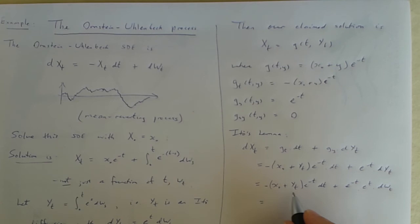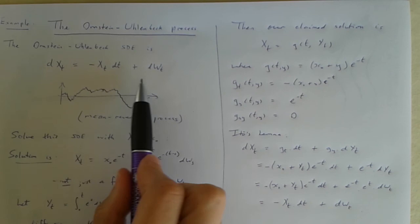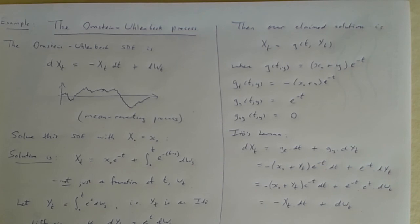And now what have we got left, well this whole thing is just minus xt, so we've got that and these two things cancel out so we're just left with one times dwt. So dxt is that which means our process that we've constructed this xt satisfies the differential equation. So that's verified that our claimed solution really is a solution of the stochastic differential equation.